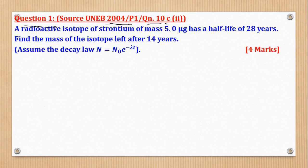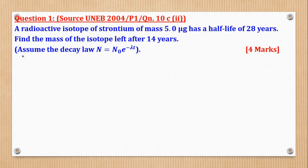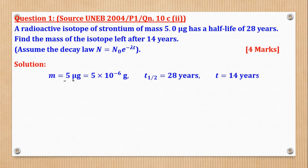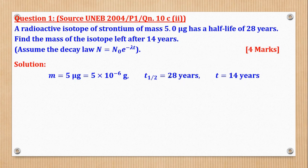Question 1 came from UNEB 2004, paper 1, question 10c, Roman 2. A radioactive isotope of strontium of mass 5.0 micrograms has a half-life of 28 years. Find the mass of the isotope left after 14 years. The mass is 5.0 × 10⁻⁶ grams, half-life is 28 years, and t is 14 years. Since the units of time are consistent, there is no need to convert.